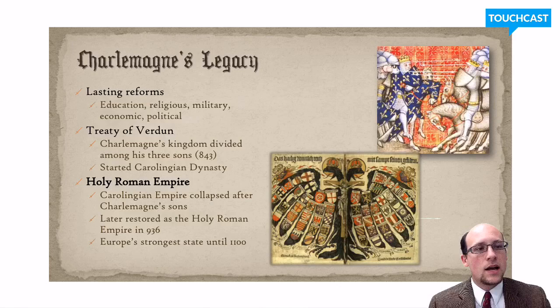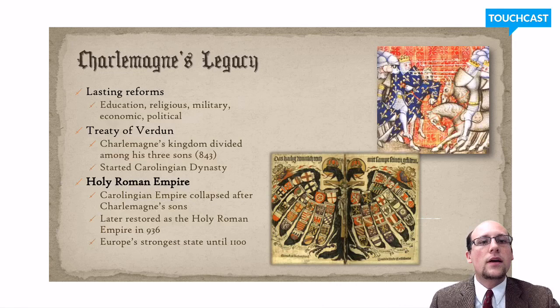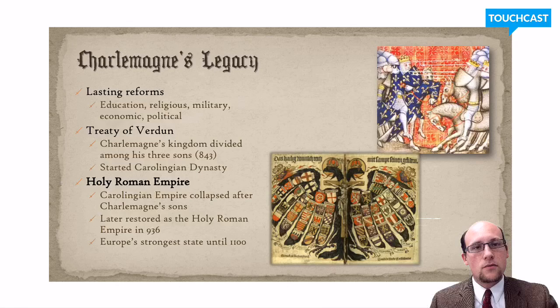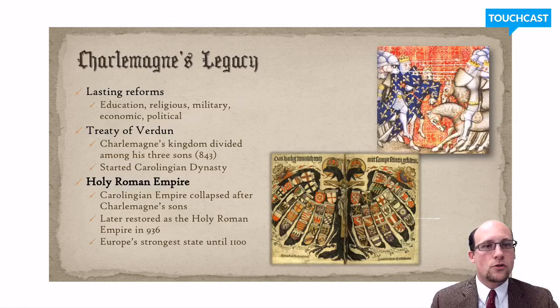But when Charlemagne died, there was a problem. In Rome, inheritance went to the eldest son, but in Frankish tradition it went to all sons. Charlemagne had three. So after his death, those three sons fought each other for control of the Frankish Empire. The conflict lasted until 843, when they signed the Treaty of Verdun, dividing the empire into three parts. This divided Charlemagne's legacy, but Western Europe still shared a single language and dominant culture. This also established the Carolingian dynasty, which ruled Western Europe for the next few hundred years.